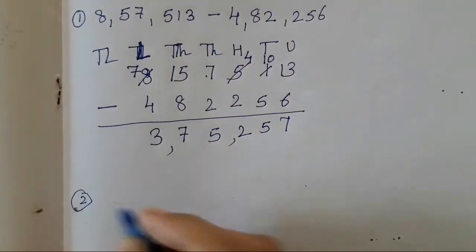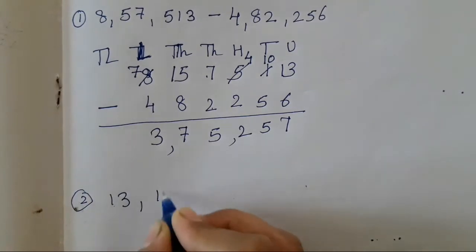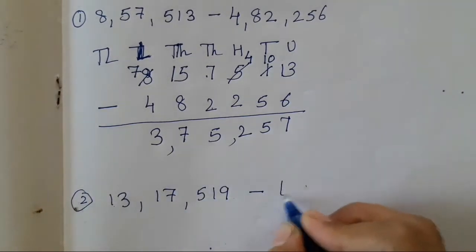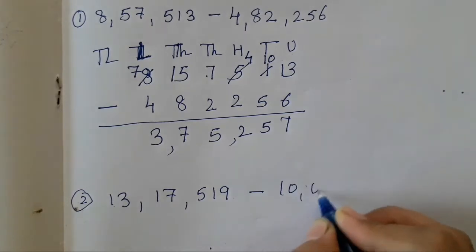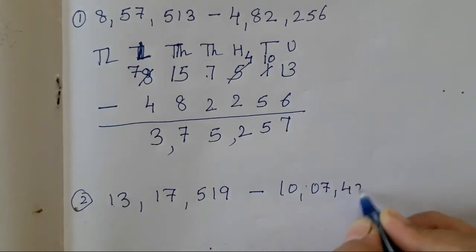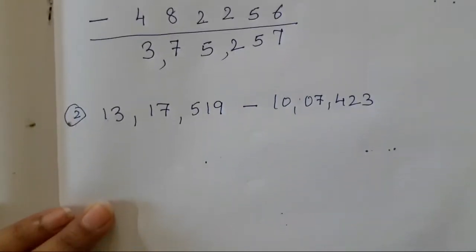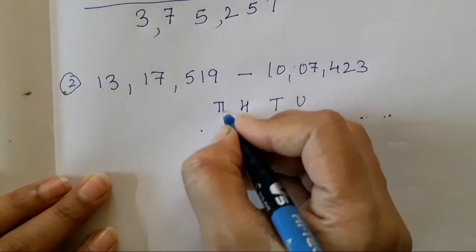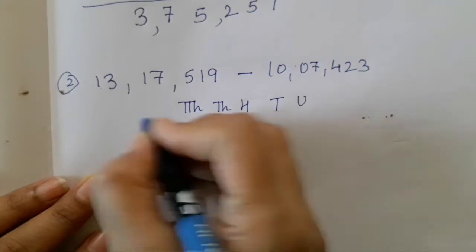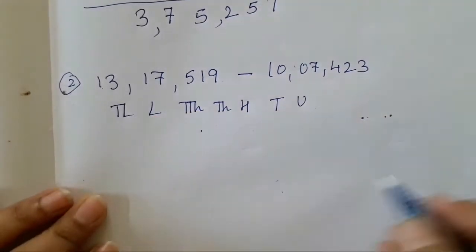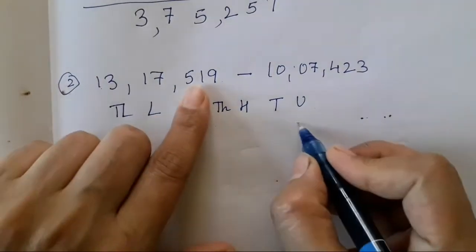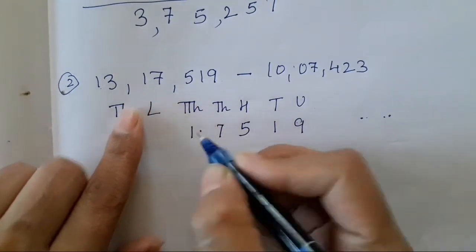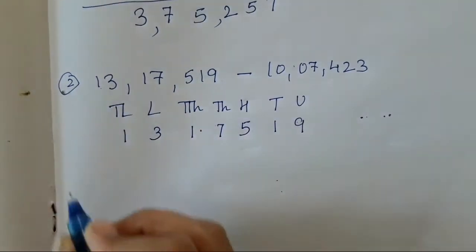Let's solve the next sum. It is 13,17,519 subtracted with 10,07,423. So units, 10s, 100, 1000, 10,000, lakh and 10 lakh. Write the numbers in reverse order so that the numbers don't get mixed.